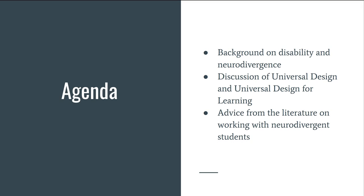Our agenda for this presentation will be: firstly, a short background on disability and neurodivergence, followed by a discussion of universal design and universal design for learning, and lastly, I'll cover some advice from the literature on working with neurodivergent students. The script and slides are available at tiny.cc/neurodiv if you prefer to follow along that way.